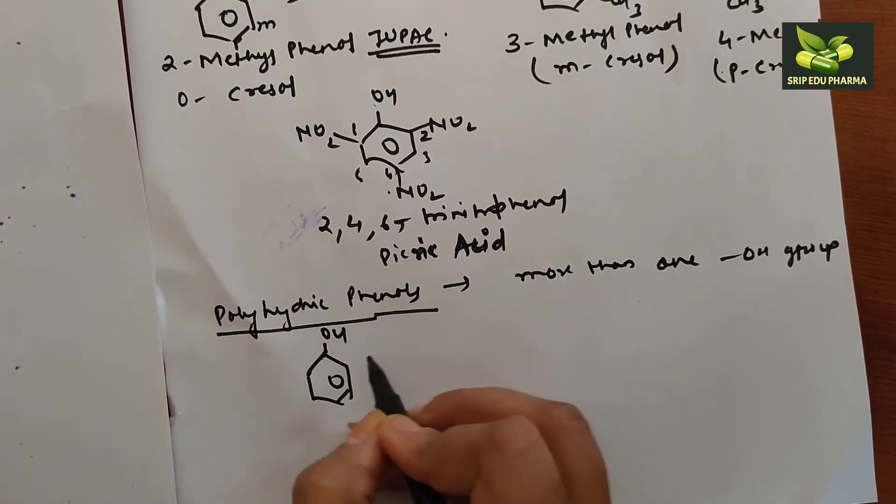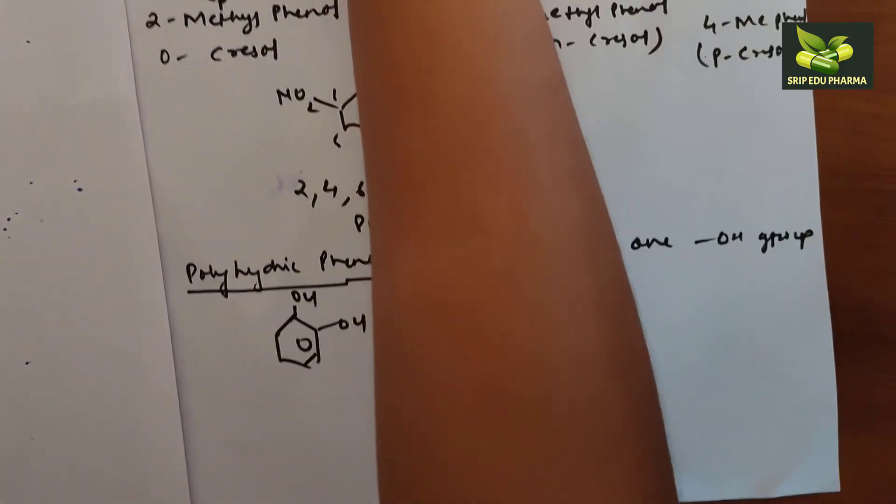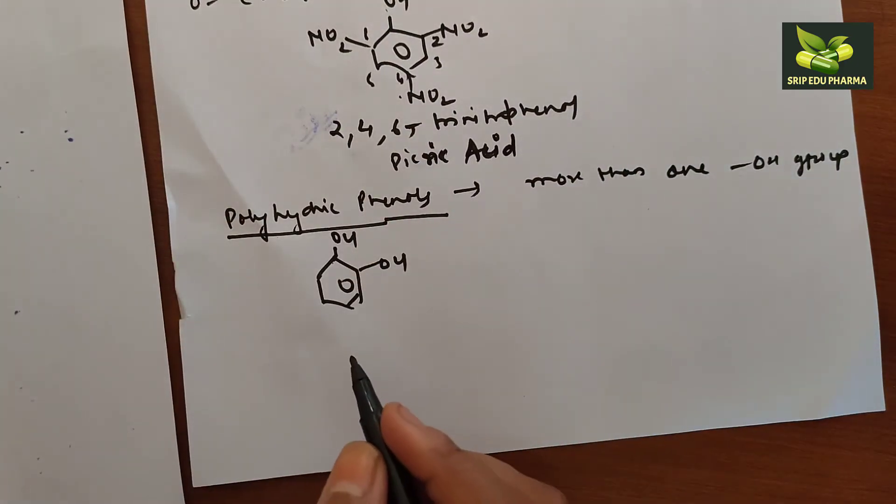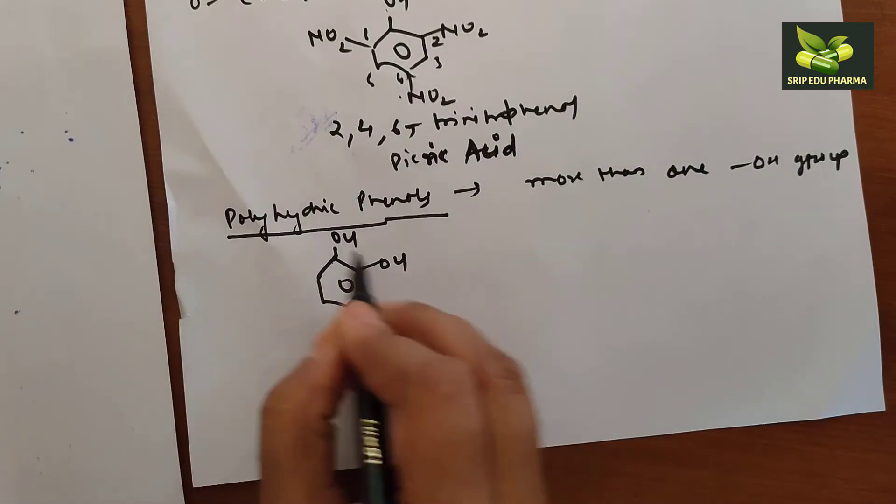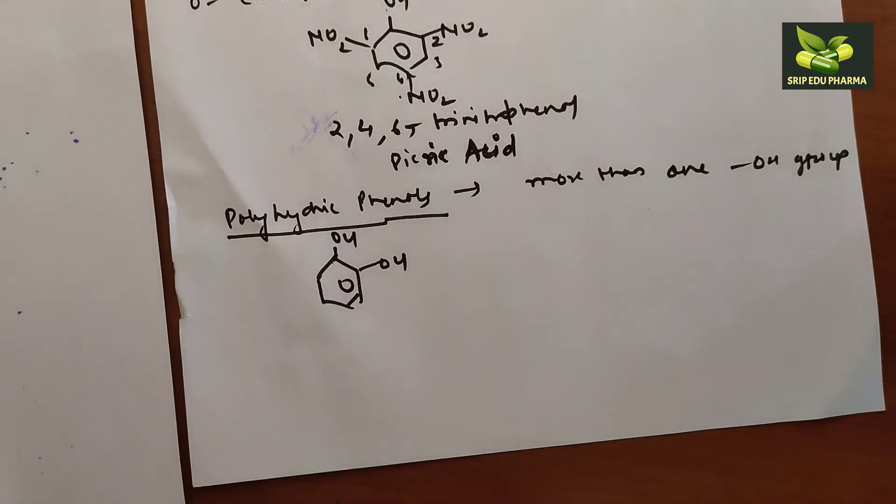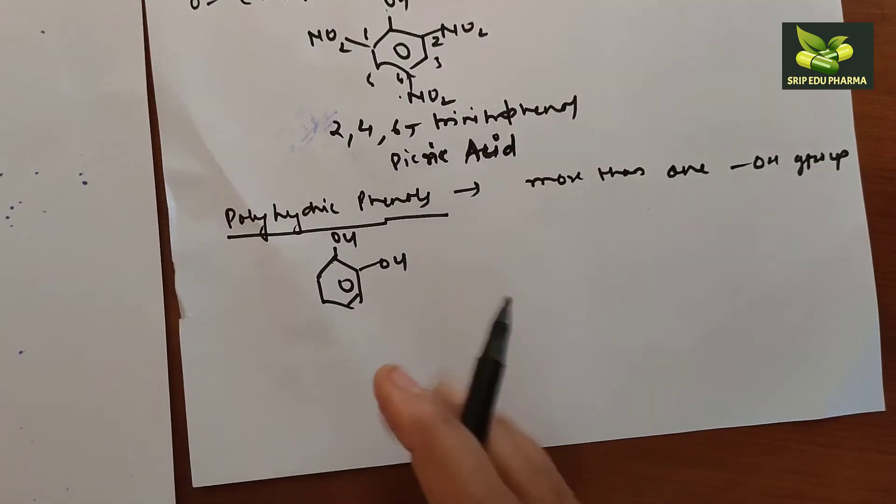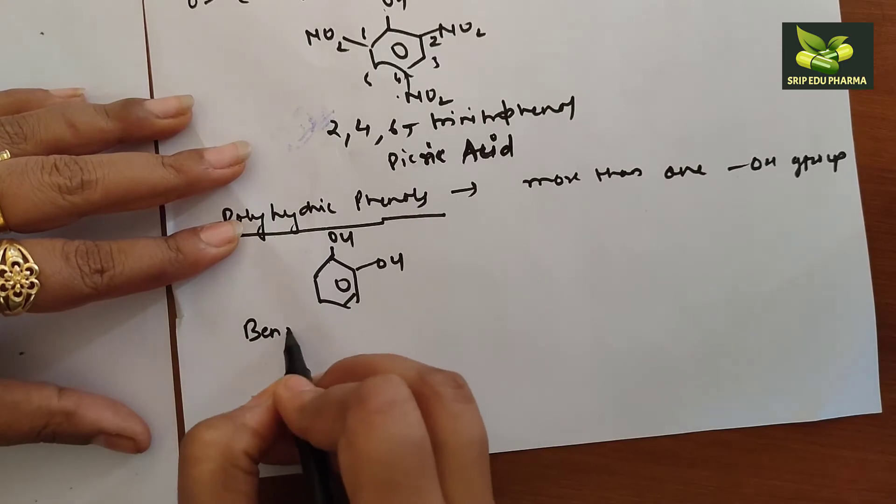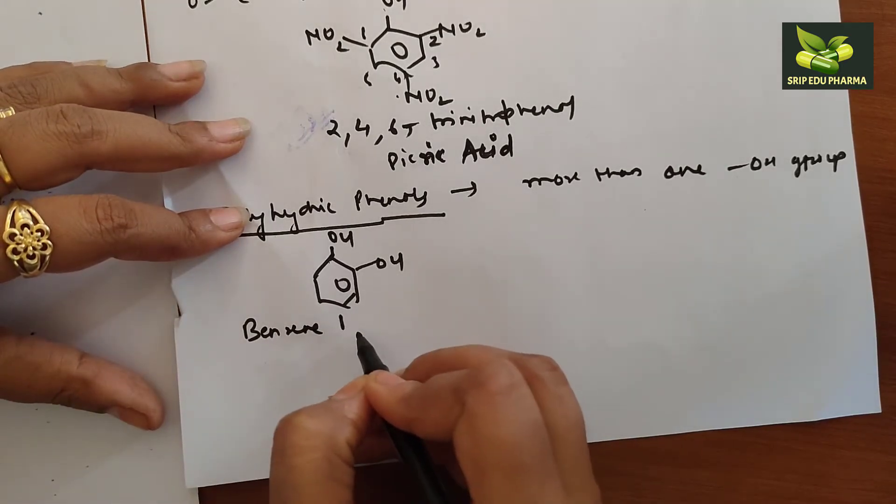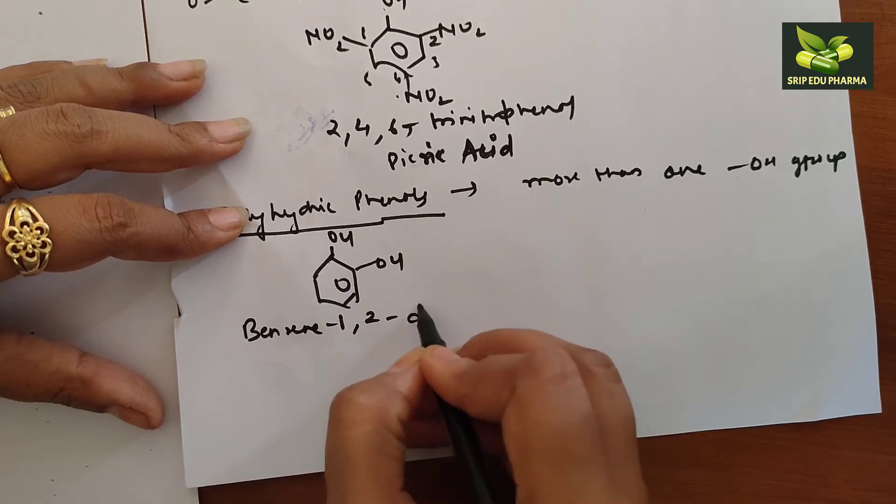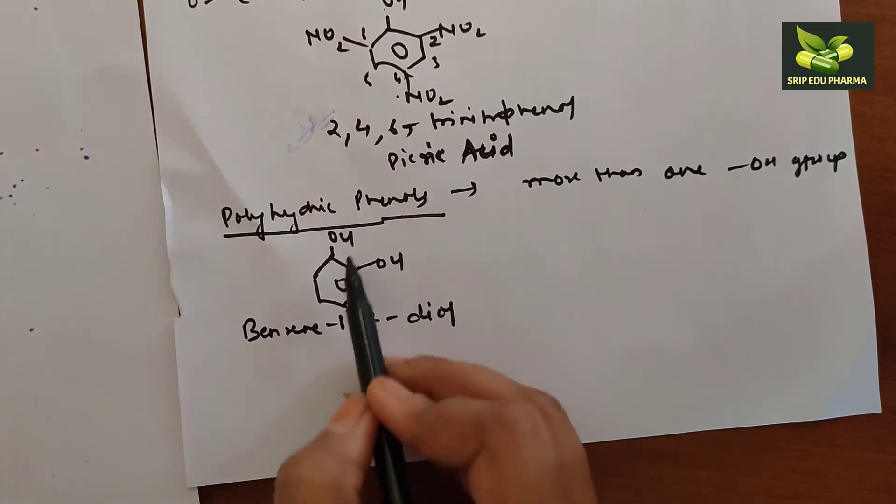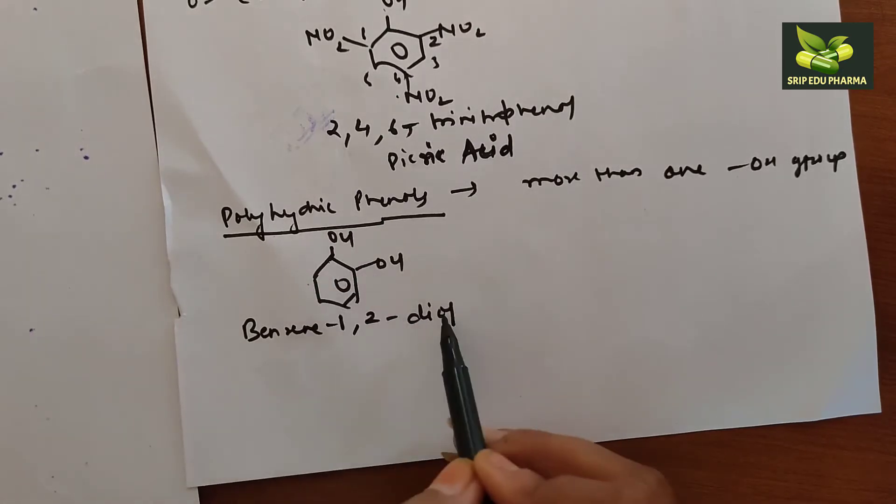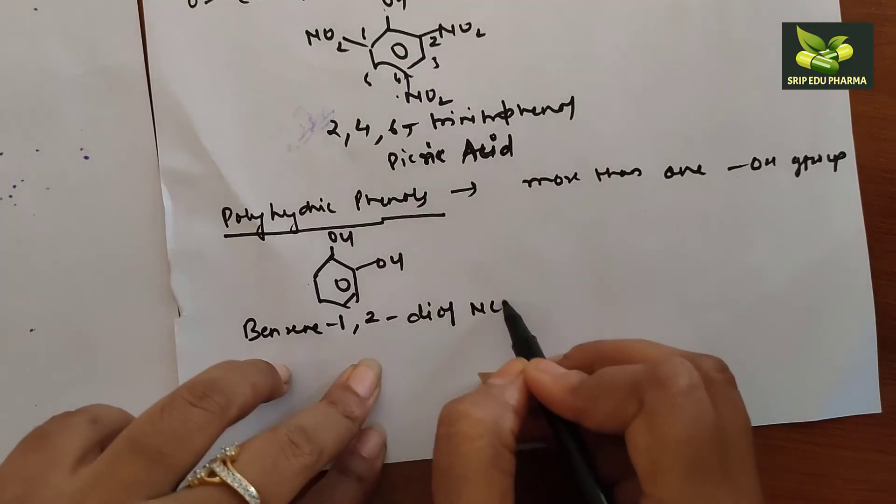This is an example. This is OH, this is OH. How will we name this? Here also the naming changes a bit. We have to use benzene nomenclature. According to NCERT, this nomenclature is used. Its naming will be benzene 1,2-diol. This is benzene, this is the first position, this is the second position. Benzene 1,2, how many OH groups are attached? Di. We denote alcohol as O-L. This is according to NCERT.